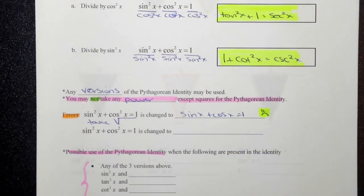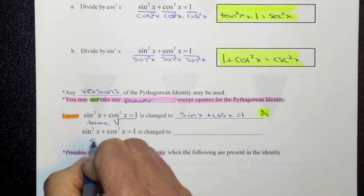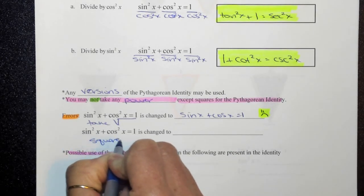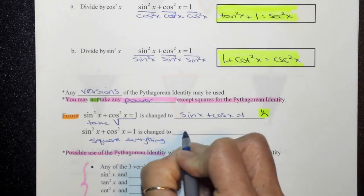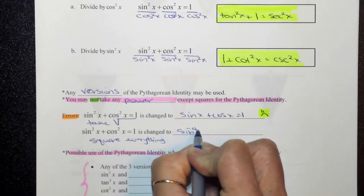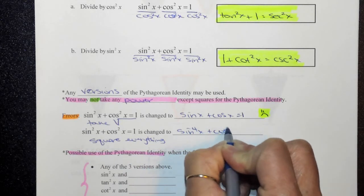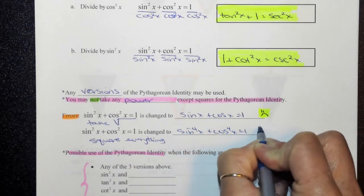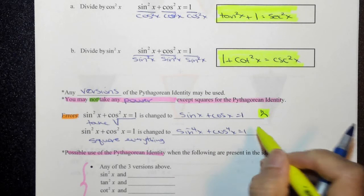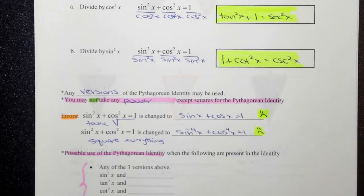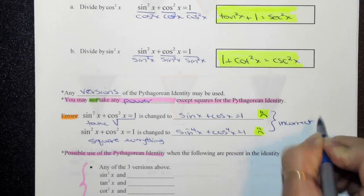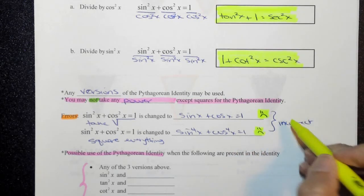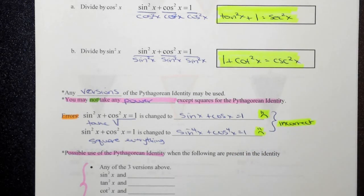And then another error would be if people squared everything. This is also another error. So then sine to the fourth of x plus cosine to the fourth of x is equal to 1. This is also bad. So we're going to say that these are incorrect. So please don't do this. But just to make you aware that you cannot.